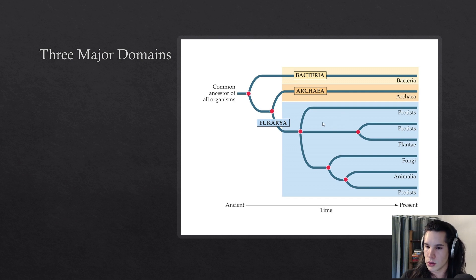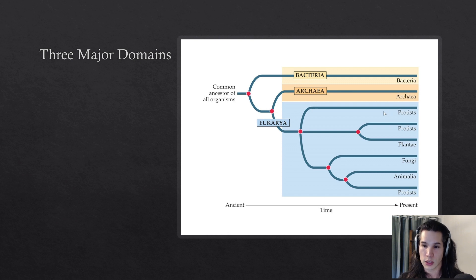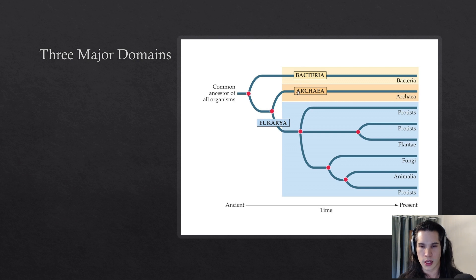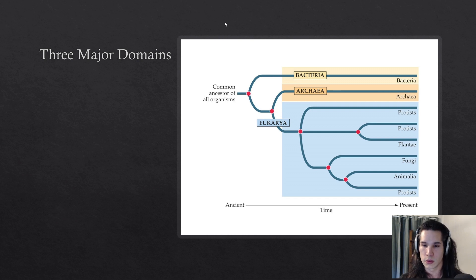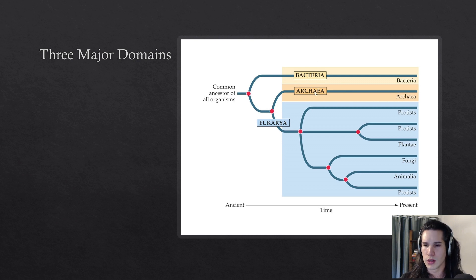The other two domains — bacteria and archaea — share a cell type. They're different domains, but very similar in that they're both prokaryotes. To break down 'prokaryote': 'pro' means adjacent to or before, so before the true seed — meaning they simply don't have nuclei. Archaea and bacteria do not have nuclei.